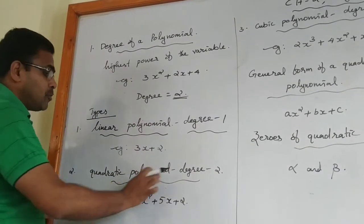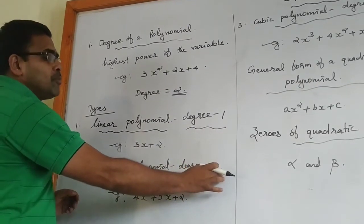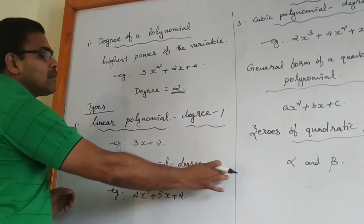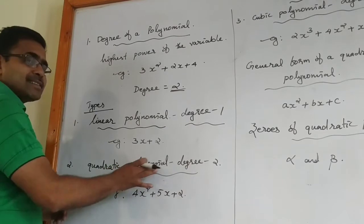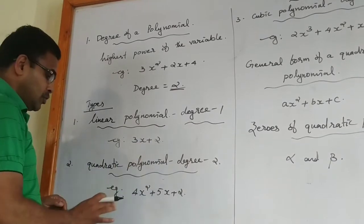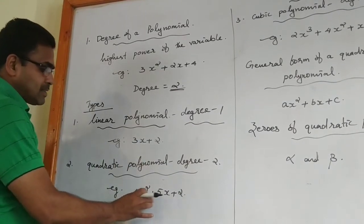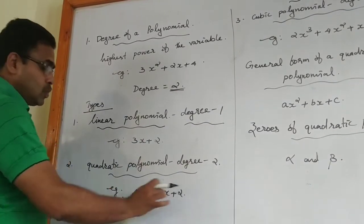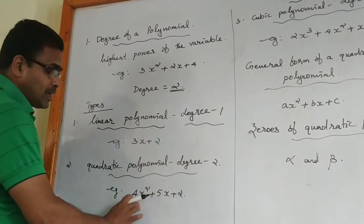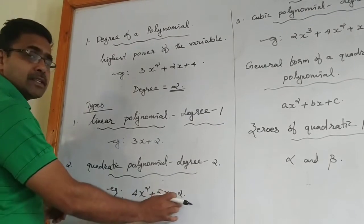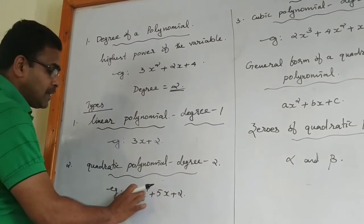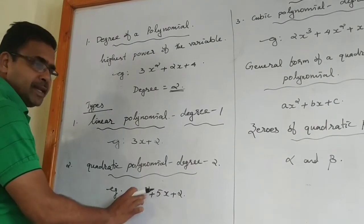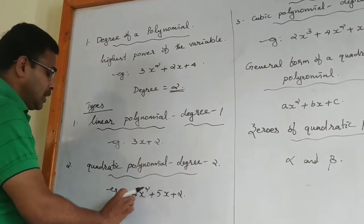Second one is quadratic polynomial. Quadratic polynomial means what? The degree of the polynomial is 2. If the degree of the polynomial is 2, we are calling it as a quadratic polynomial. For example, 4x² + 5x + 2. In this polynomial, the degree or the highest power of the variable is 2.